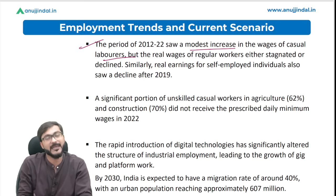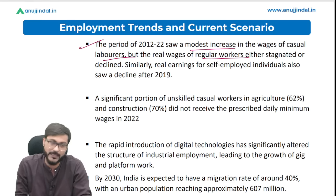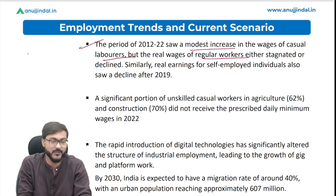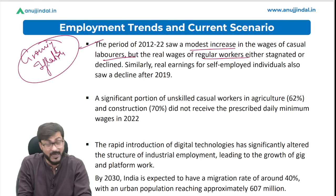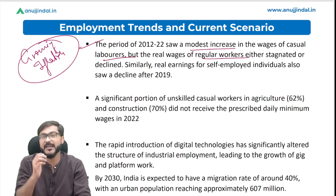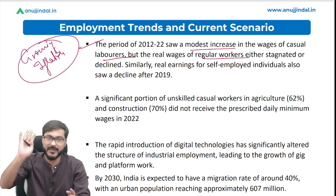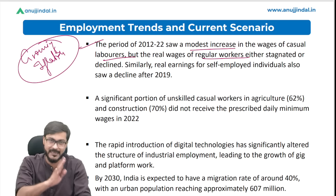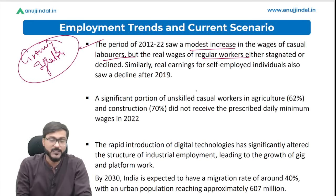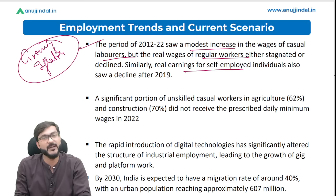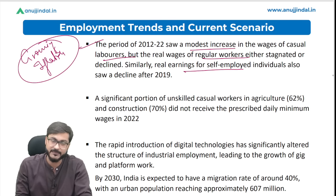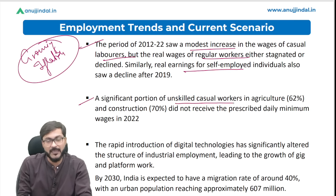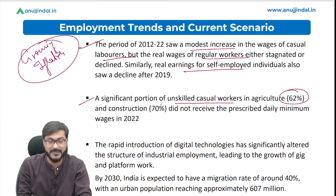Real wages of regular workers either stagnated or declined, attributed to growing inflation — wages are rising in absolute numbers but not in real terms. Similarly, real earnings for self-employed individuals also saw a decline after 2019. A significant portion of unskilled casual workers in agriculture (62 percent) and construction (70 percent) did not receive the prescribed daily minimum wages.